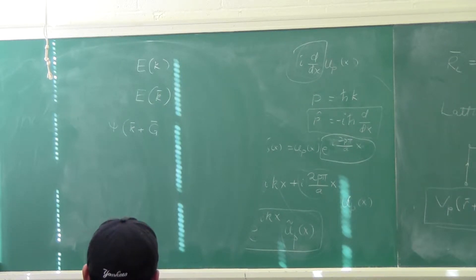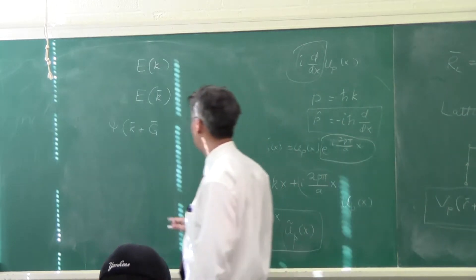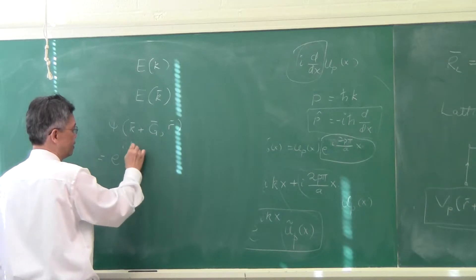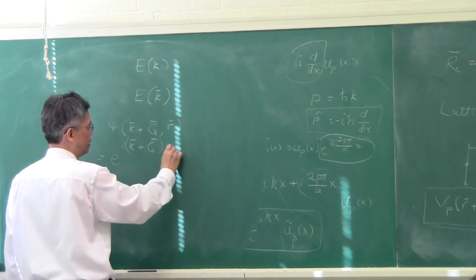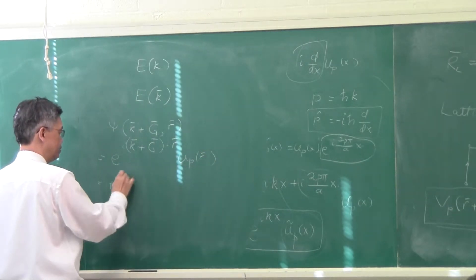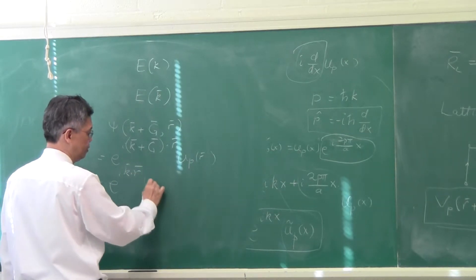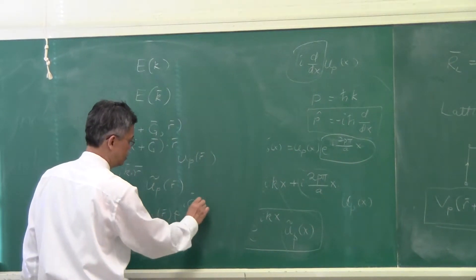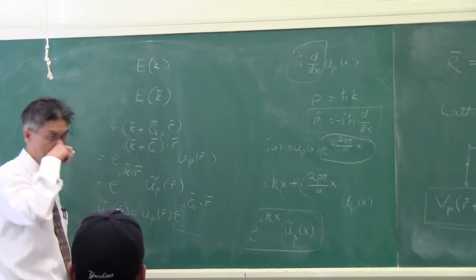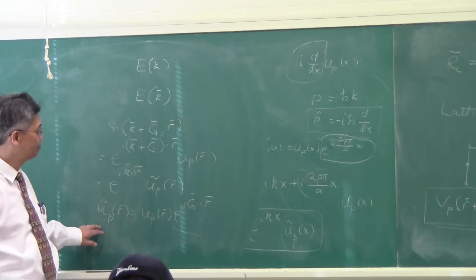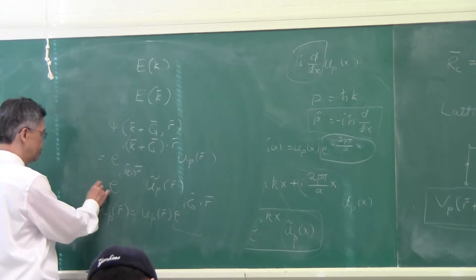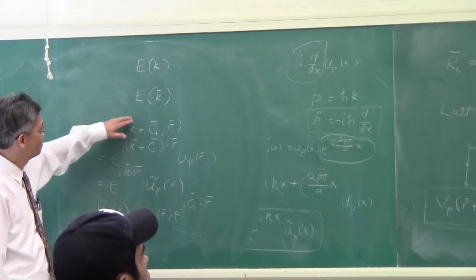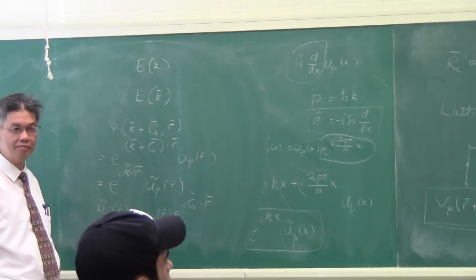G is called the reciprocal lattice vector. If I translate my Bloch mode by a reciprocal lattice vector, I get on the right-hand side e^(iG·r)·u(r). I can lump this together with u(r) and call it ũ(r) = u(r)·e^(iG·r). This is again a periodic function in r on the lattice. So this is also a Bloch mode, and if I find the eigenvalues going through the same procedure, translating k by the reciprocal lattice vector gives the same sets of eigenvalues.